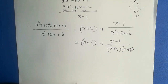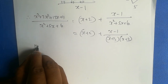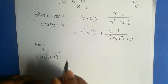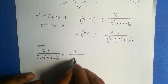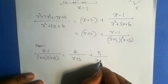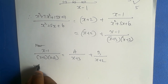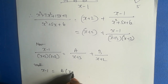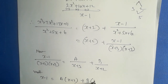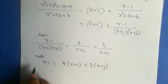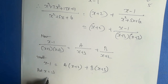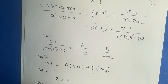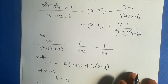Now we will simplify this. We write A by (x plus 3) plus B by (x plus 2). By multiplying, x minus 1 equals A into (x plus 2) plus B into (x plus 3). Put x equal to minus 3, we get B equal to 4. Put x equal to minus 3, a equals minus 3. Now we will substitute this.